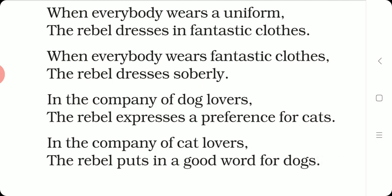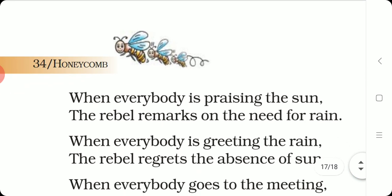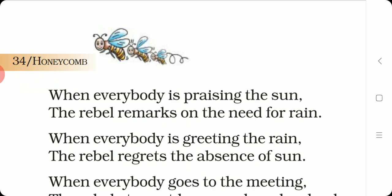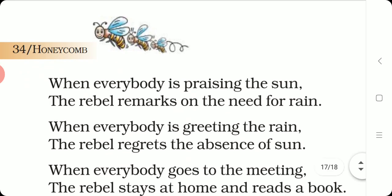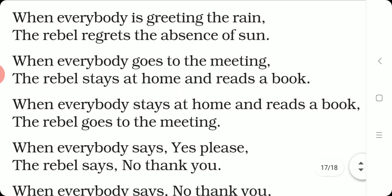When everybody wears fantastic clothes, the rebel dresses soberly. In the company of dog lovers, the rebel expresses a preference for cats. In the company of cat lovers, the rebel puts in a good word for dogs. When everybody is praising the sun, the rebel remarks on the need for rain. When everybody is greeting the rain, the rebel regrets the absence of sun. When everybody goes to the meeting, the rebel stays at home and reads a book. When everybody stays at home and reads a book, the rebel goes to the meeting.